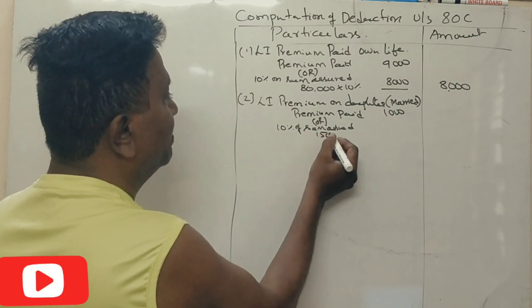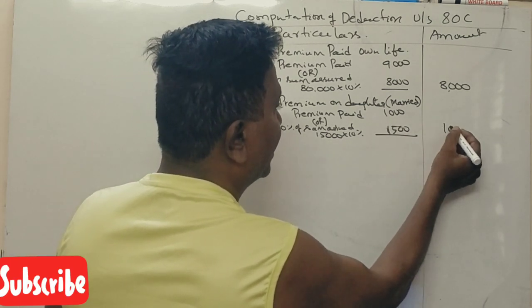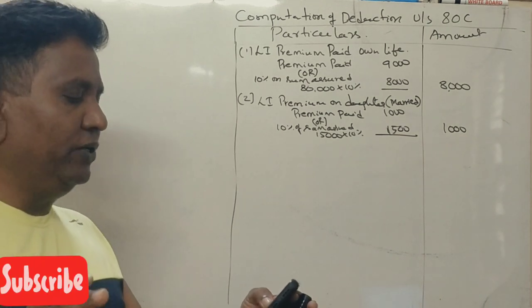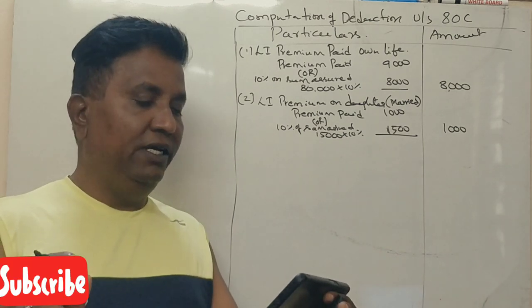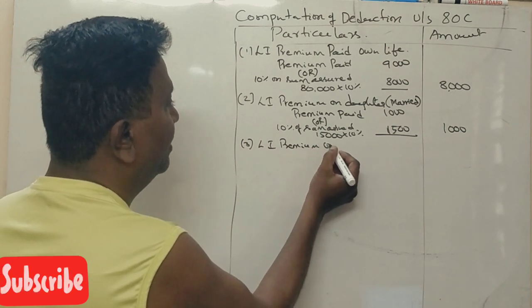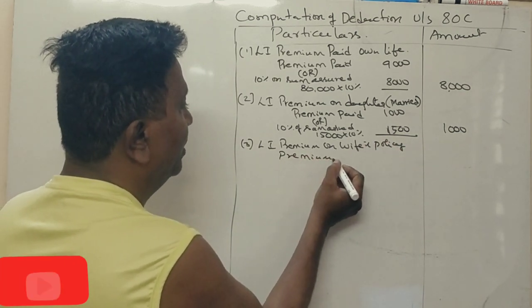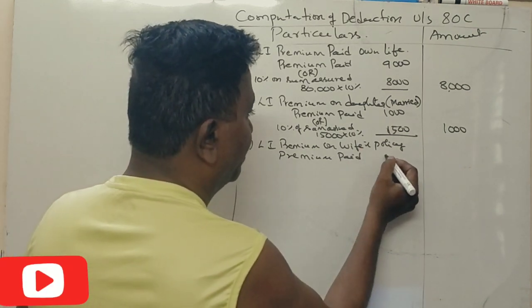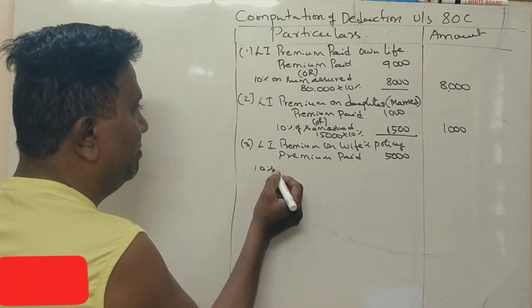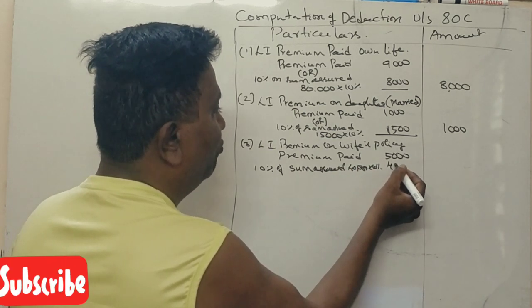Next, life insurance policy Rs. 40,000 on wife's life, 5,000 rupees premium. LIC premium on wife's policy, actual premium payment is 5,000 rupees. Now, 10% of sum assured. Sum assured is 40,000, 10% is 4,000. So 4,000 is eligible for deduction under section 80C.